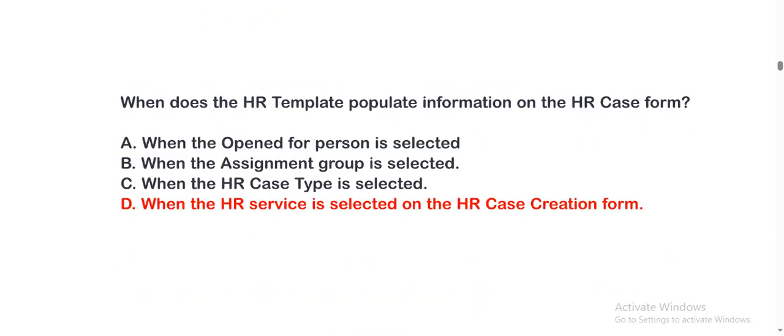When does the HR template populate information on the HR case form? The options are: Option A, When the Opened For person is selected; Option B, When the Assignment Group is selected; Option C, When the HR Case Type is selected; Option D, When the HR Service is selected on the HR case creation form. The correct option is Option D.